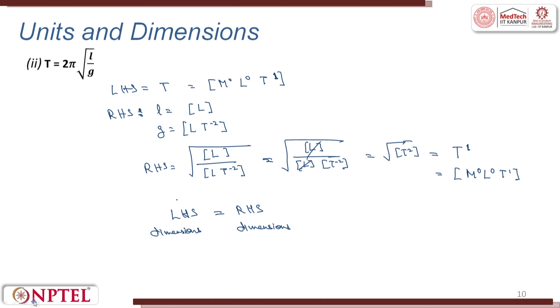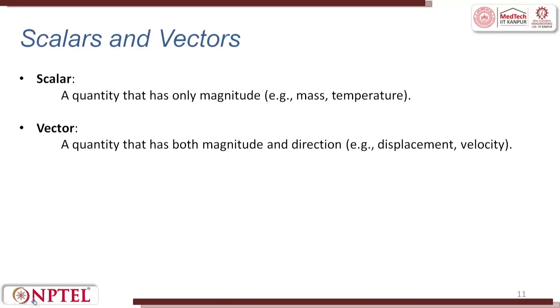Moving to scalars and vectors from week 1: a scalar is a quantity with only magnitude, such as mass or temperature. A vector is a quantity with both magnitude and direction — for example, displacement and velocity are vectors.